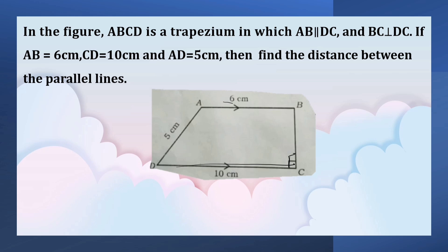If AB equals 6 centimeters, CD equals 10 centimeters, and AD equals 5 centimeters, then find the distance between the parallel lines.